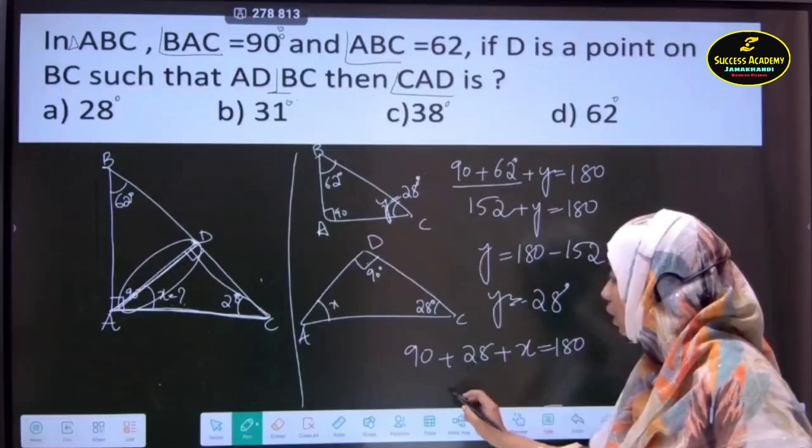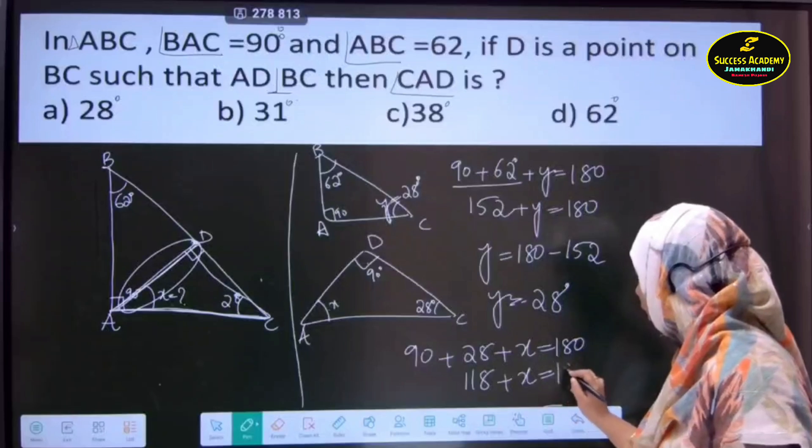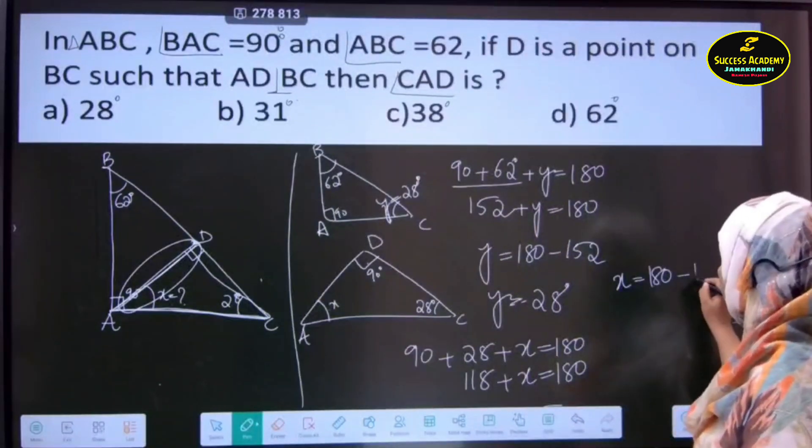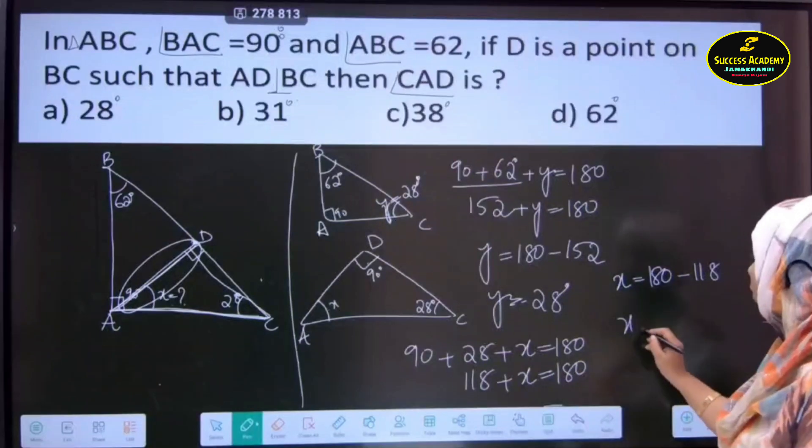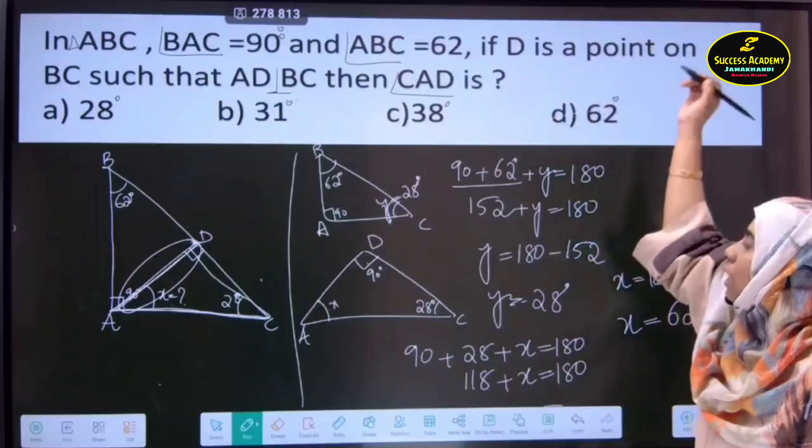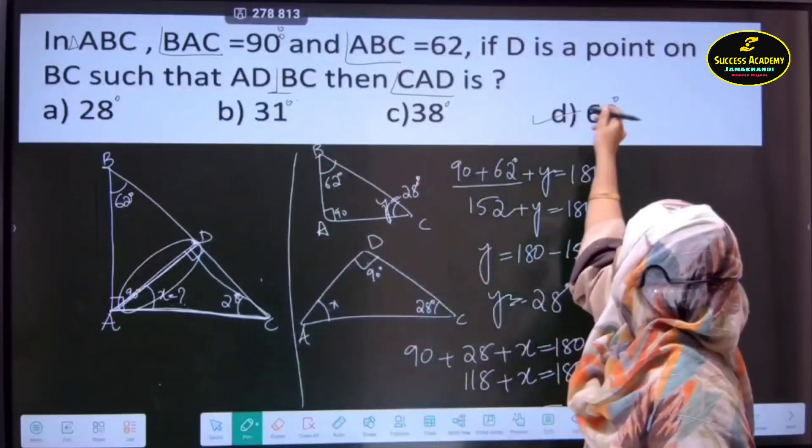Then, 90 plus 28, 118. Plus X is equal to 180. And, only X is equal to 180 minus 118. So, X is equal to how much? 62 degrees. This is only the required solution. 62 degrees.